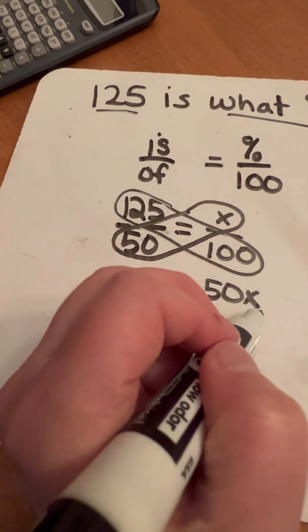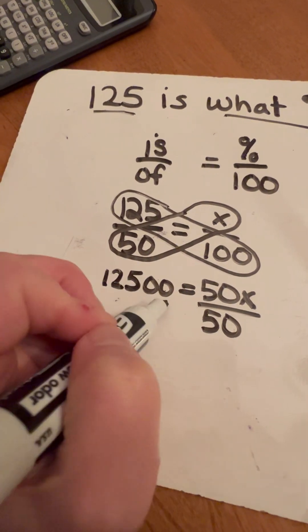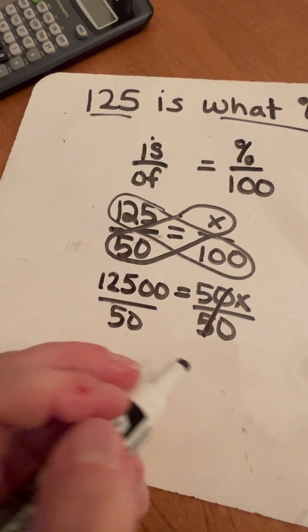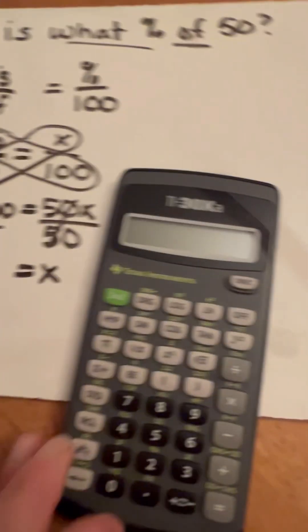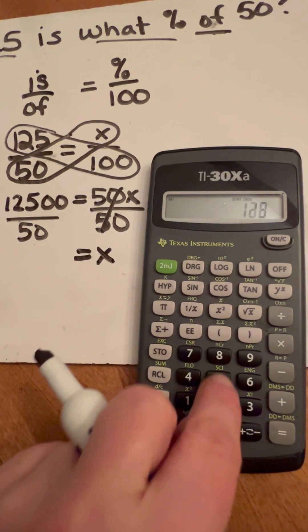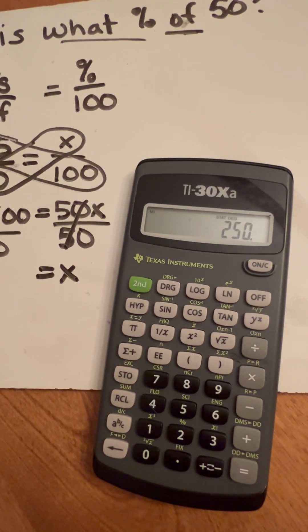And I want to get X by itself. So we do opposite operation of multiplying, which is to divide both sides. 50 divided by 50 is one. So we're going to be left with one X, which is what we need. And then, not that I don't know how to do this, but I'll show it to you. So you're going to do 12,500. We're going to divide that by 50 and you get 250.